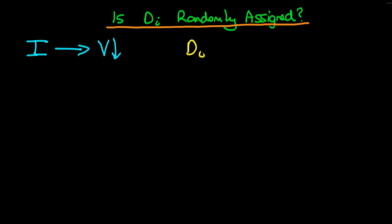One method we could use is to look at the level of certain variables where di is equal to zero and compare that with the mean level of those variables where di is equal to one. In other words, we're comparing those which didn't receive infrastructure spending with those that did. Intuition suggests we should look at the mean values of variables which we think are important determinants of violence, because if there is a difference between these two groups, the simple means comparison might actually reflect differences in these underlying variables rather than the actual effect of the treatment.